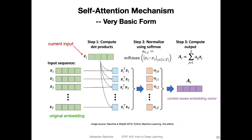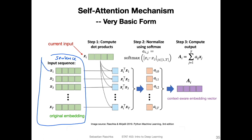Here is a visual representation of what we've just talked about. Assume we have this input sequence — you can think of it as a sentence. Each x vector represents a word as an embedding. We've talked about this in the context of RNNs, where we convert the word into an integer index and retrieve the embedding from an embedding matrix. The embedding is essentially a continuous-valued vector for each particular word. In step one, we compute the similarity with the query — the current input — using the dot product between query x_i and each other word in the sentence.